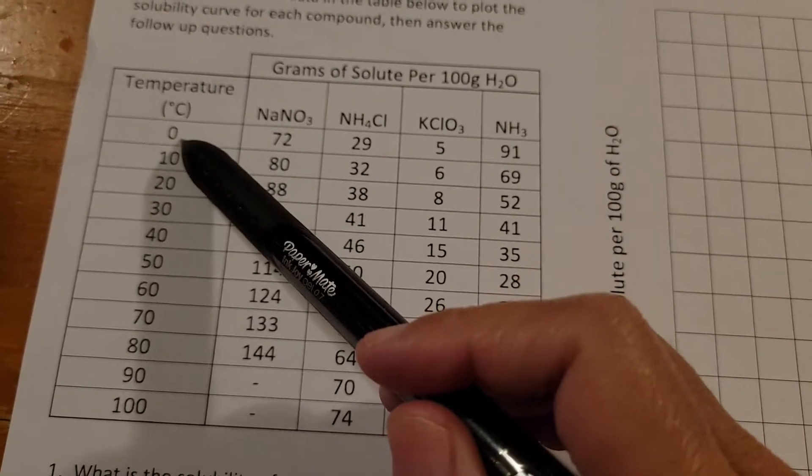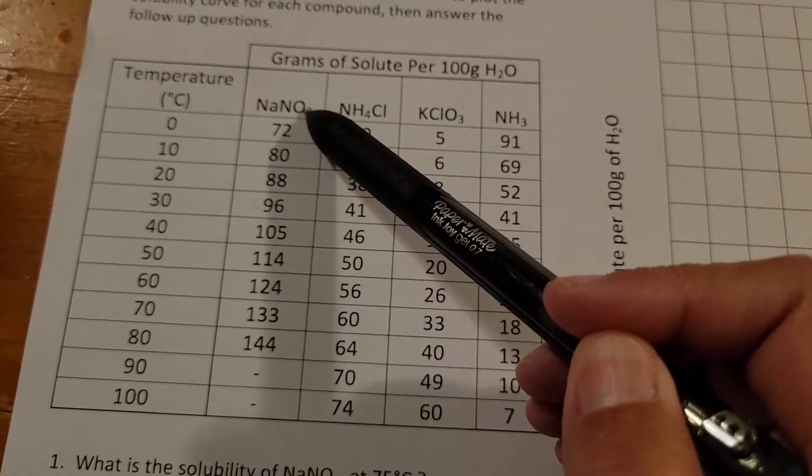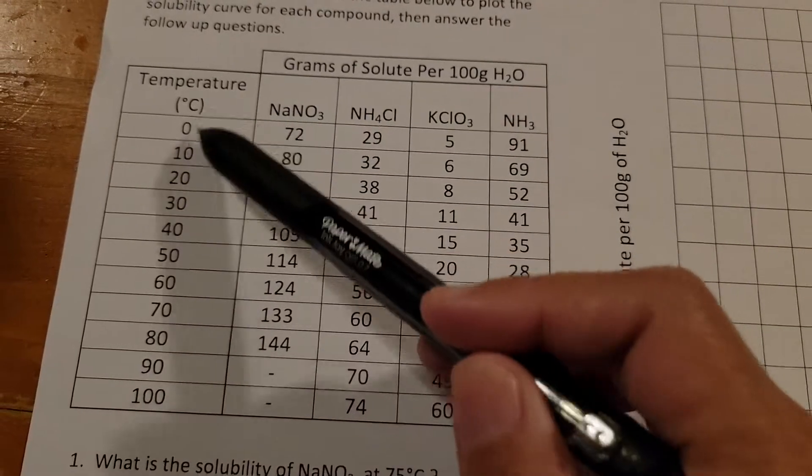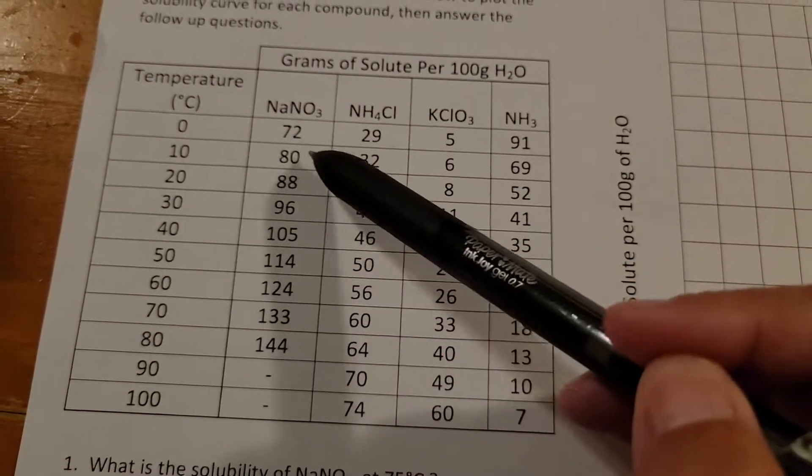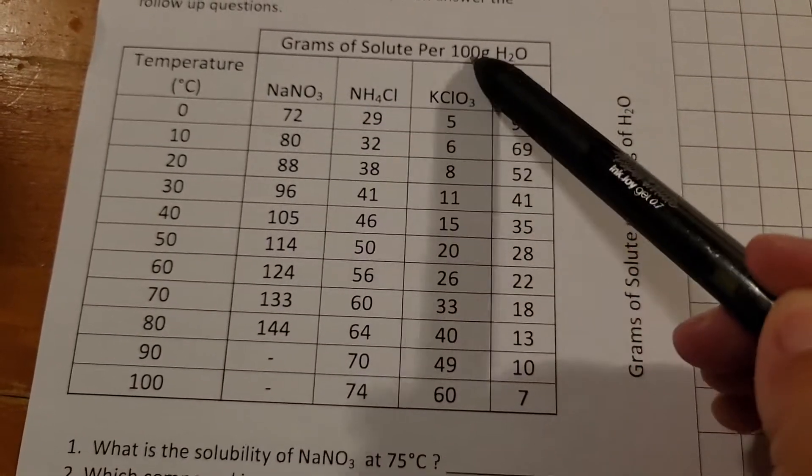So for example, at zero degrees I can dissolve 72 grams of NaNO3 in 100 grams of water. At 10 degrees I can dissolve 80 grams in 100 grams of water.